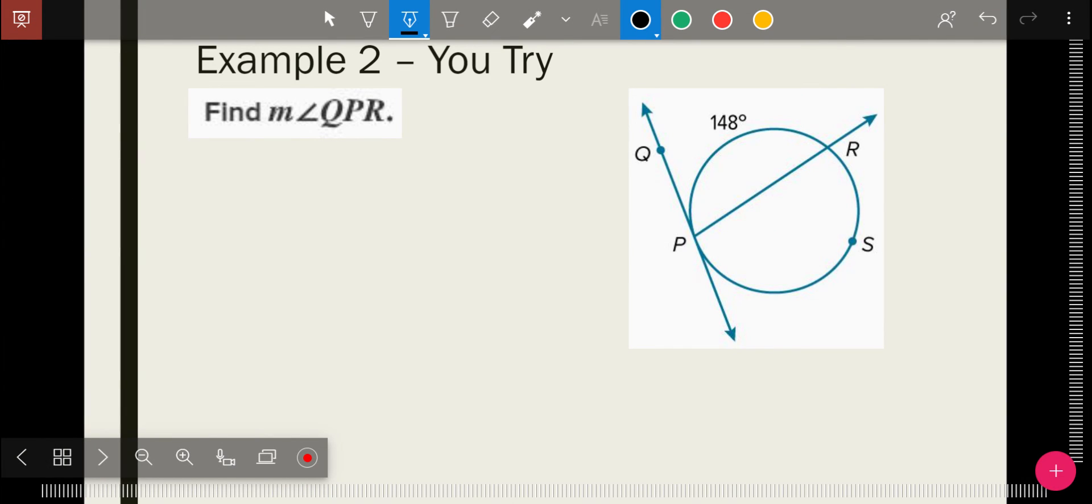You give this one a try. How do you find angle QPR? What is the degree measure? The vertex is on the circle. Hopefully you've got that it's half of 148, so it's 74.